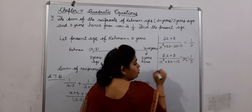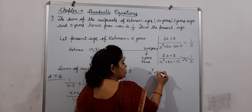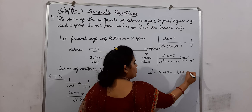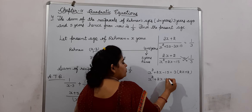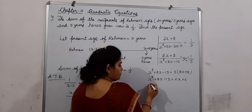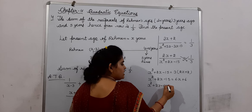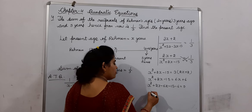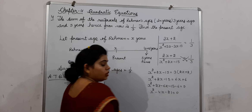Now we will do cross-multiplying. On cross-multiplying, we get X squared plus 2X minus 15 equals 3 into (2X plus 2), which gives 6X plus 6. Rearranging: X squared plus 2X minus 6X minus 15 minus 6 equals 0, giving us X squared minus 4X minus 21 equals 0.